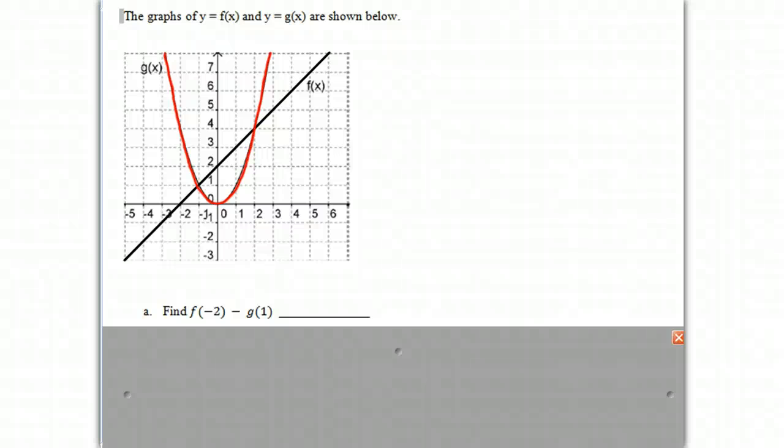Today we're going to do some operations on functions given a graph. Our first graph is function f of x, and we're going to be finding f of negative 2. Our other function is g of x, the red function. We're going to be finding g of 1, and we're going to be doing a subtraction.